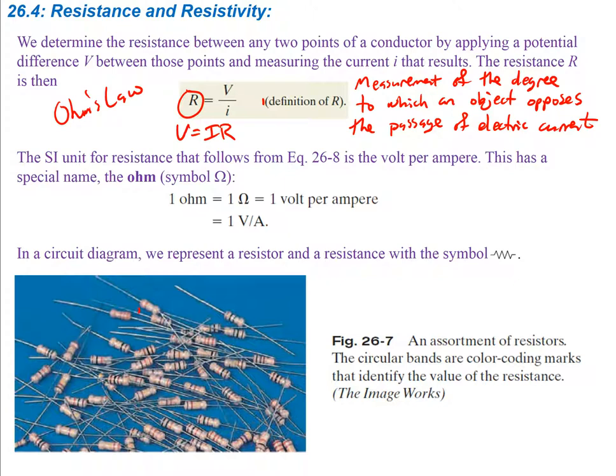The SI unit for resistance is volt divided by ampere, and we call that an Ohm (O-H-M), represented by the capital omega symbol. In a circuit diagram, a resistor is represented by a squiggly symbol. When drawing your circuit you'll have a battery, possibly a capacitor, and then your resistor.